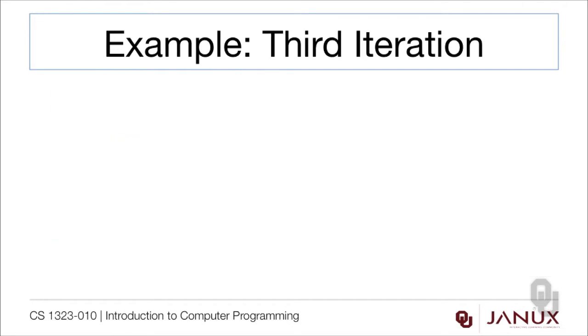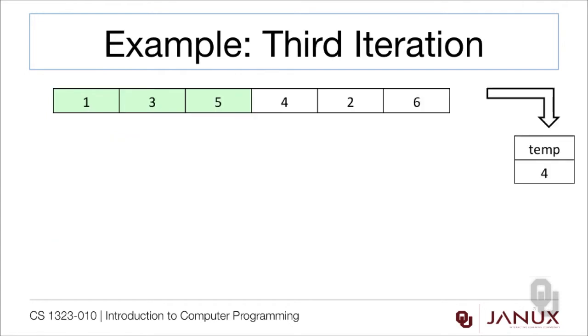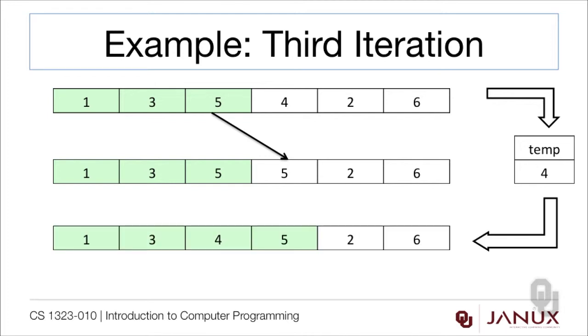Let's look at the third iteration now. 4 gets moved into temp. 5 is bigger than 4, so it gets moved over, but 4 is bigger than 3, so 3 does not get moved over. Instead, 4 gets moved into the position that 5 was at first. And so there we have 4 values sorted.